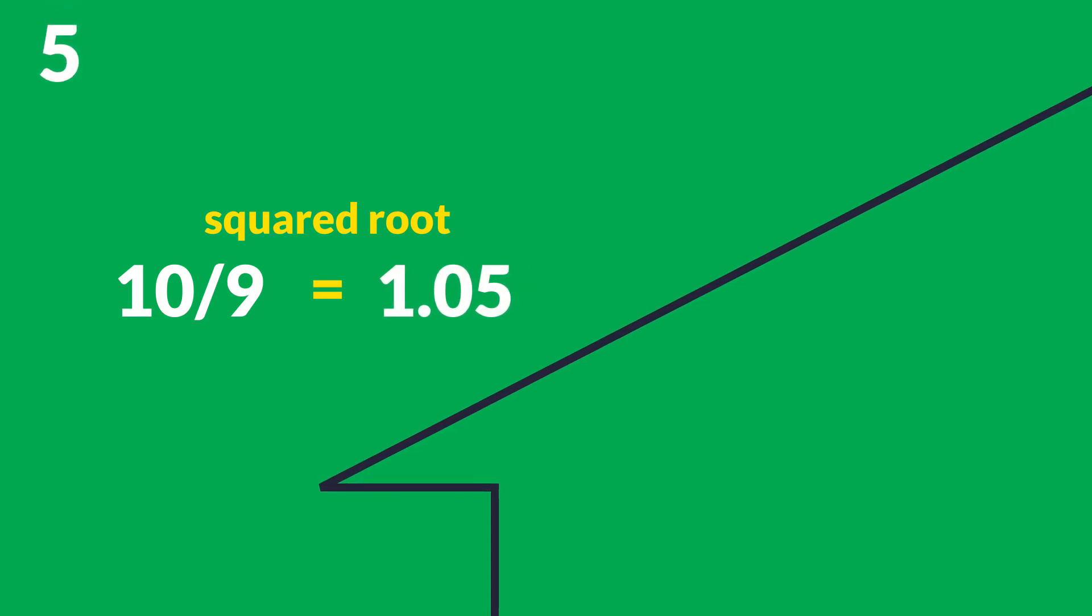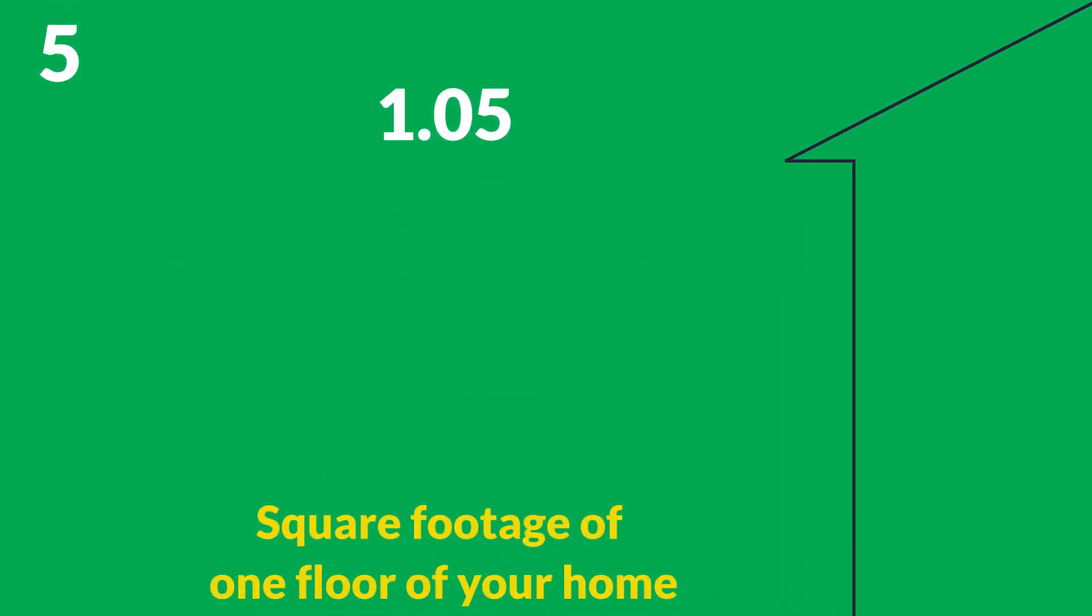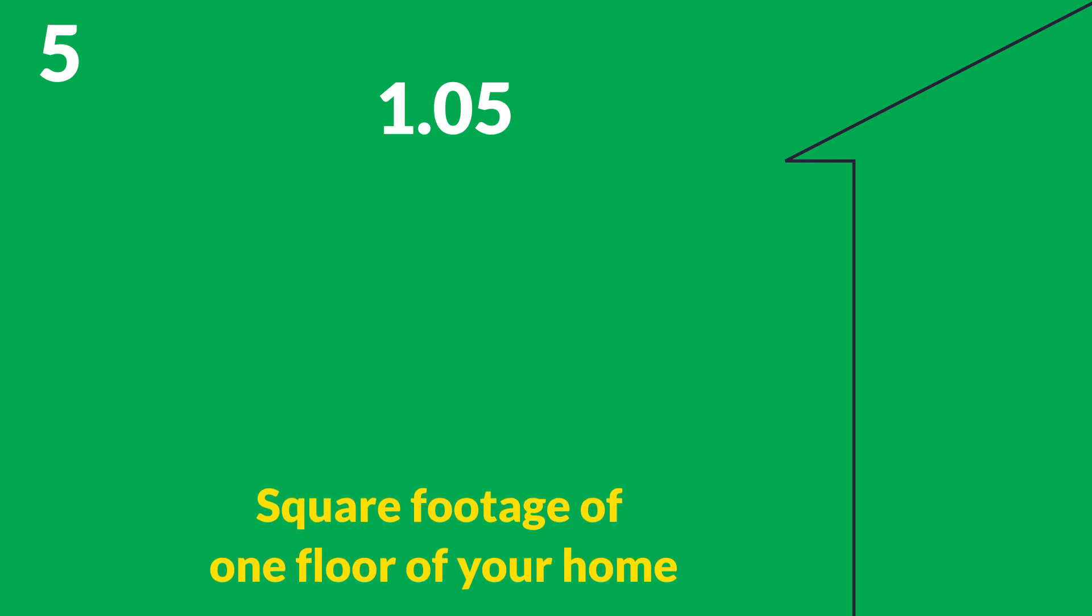Number 5: Determine the square footage of one floor of your home. For example, if you have a two-story home that's 2,600 square feet, one floor would be 1,300 square feet.